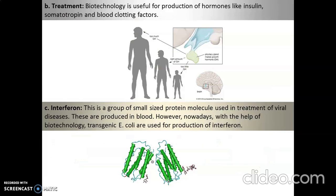Biotechnology is also used for the production of hormones like insulin for diabetes, and somatotropin, which is the growth hormone produced by the pituitary gland. If there is too much or too little growth hormone, growth is affected — it has to be in the right amount. Then we have interferons, which are a group of small-size protein molecules used in the treatment of viral disease. They are very similar to antigens and are produced in our blood.